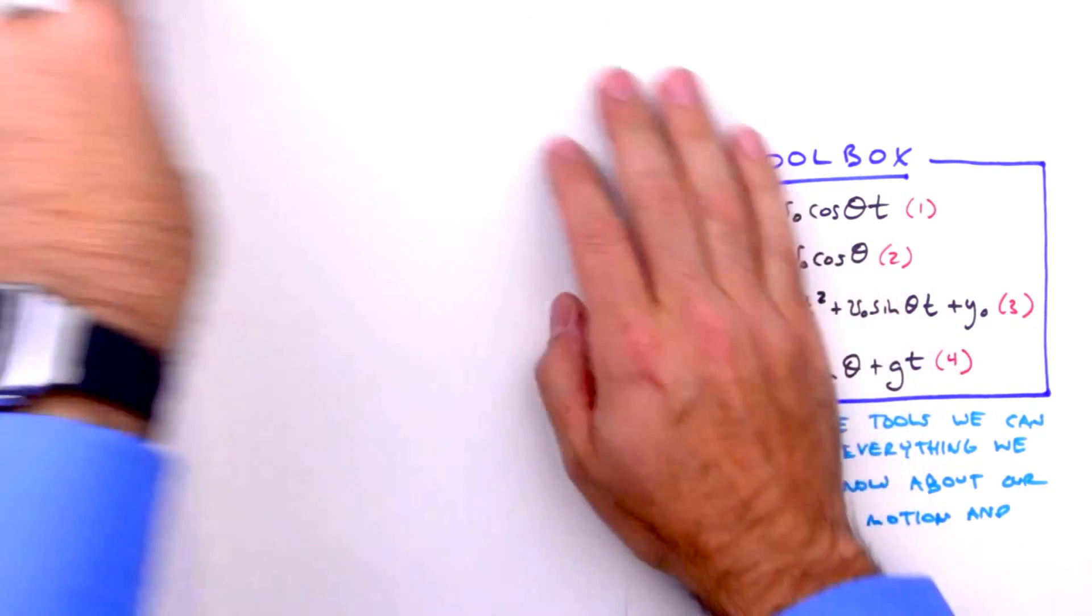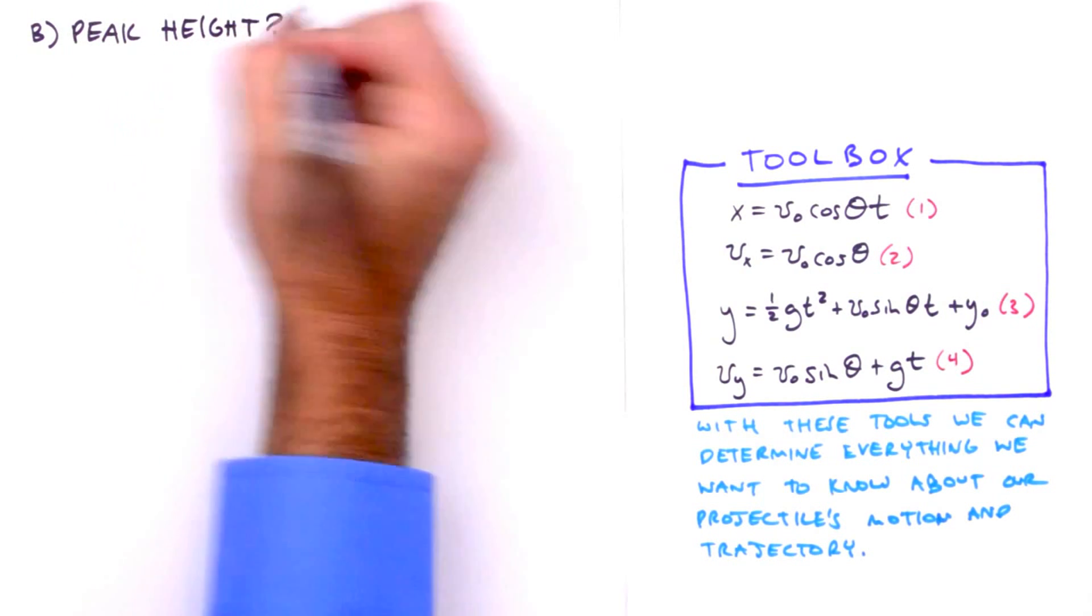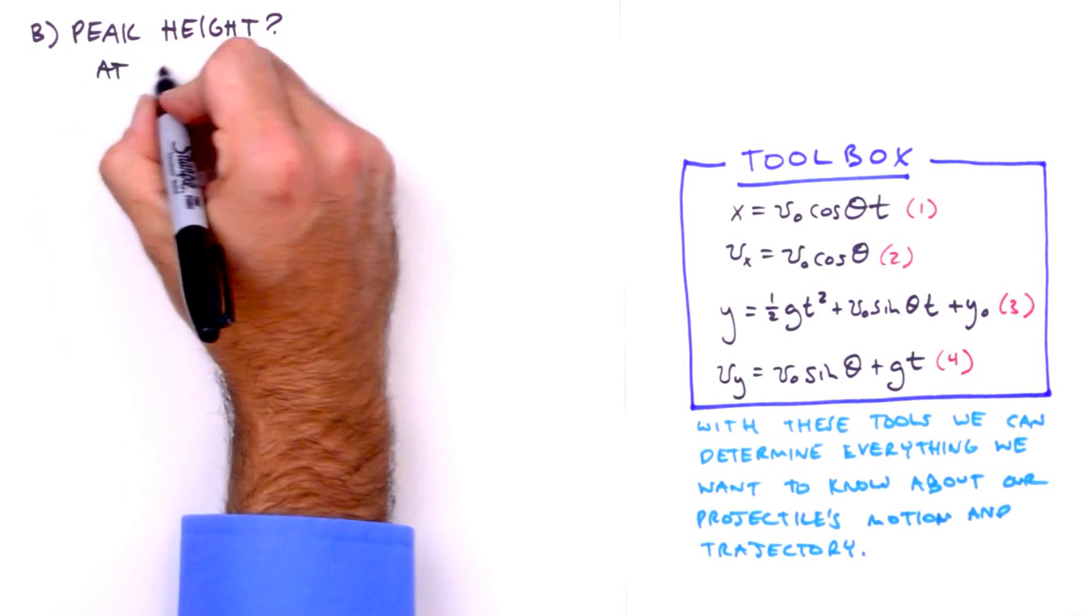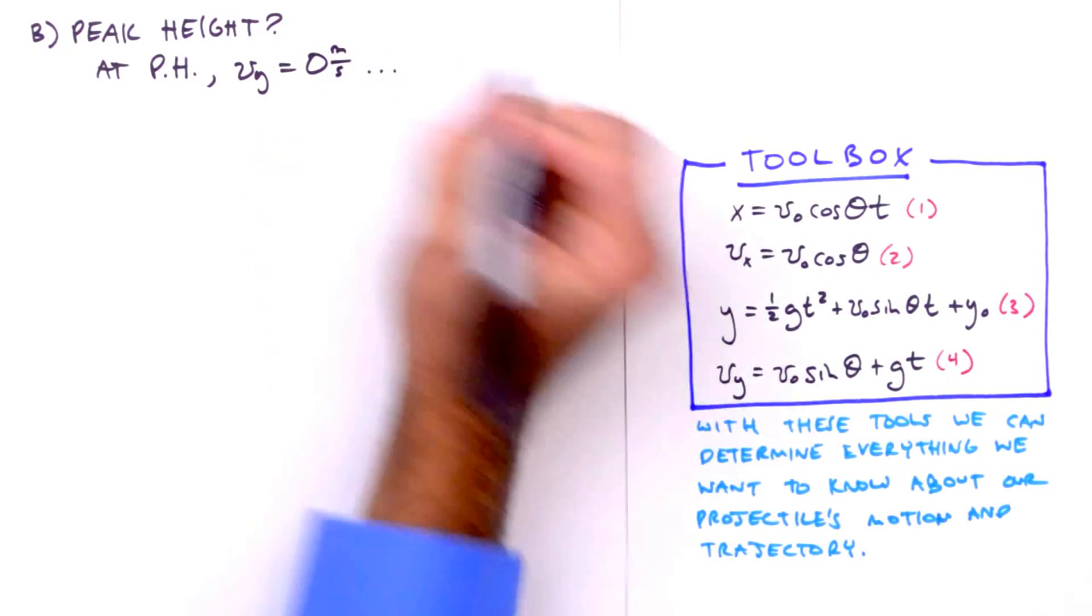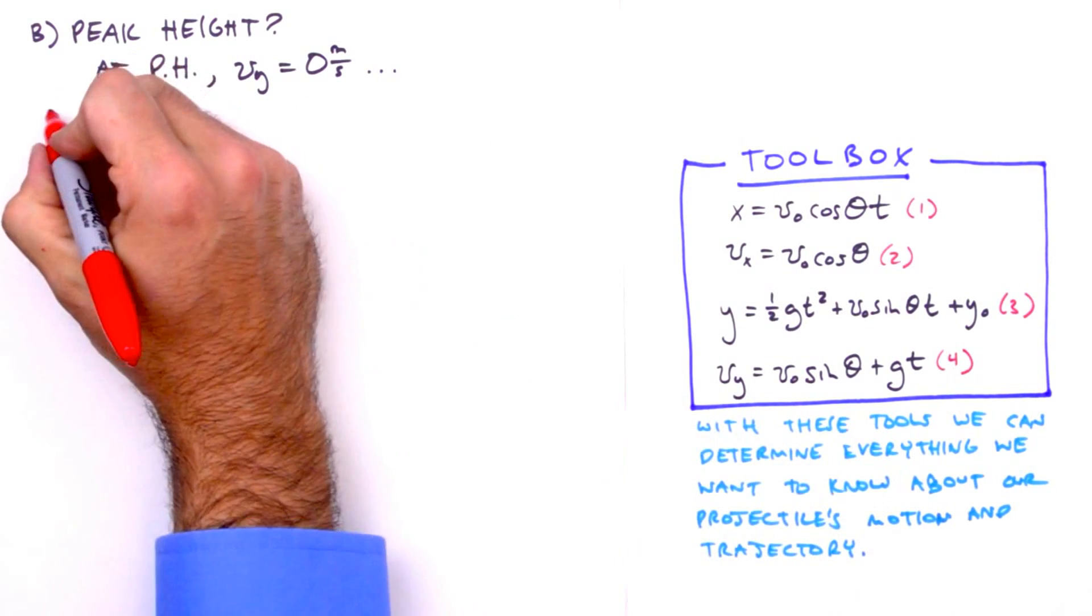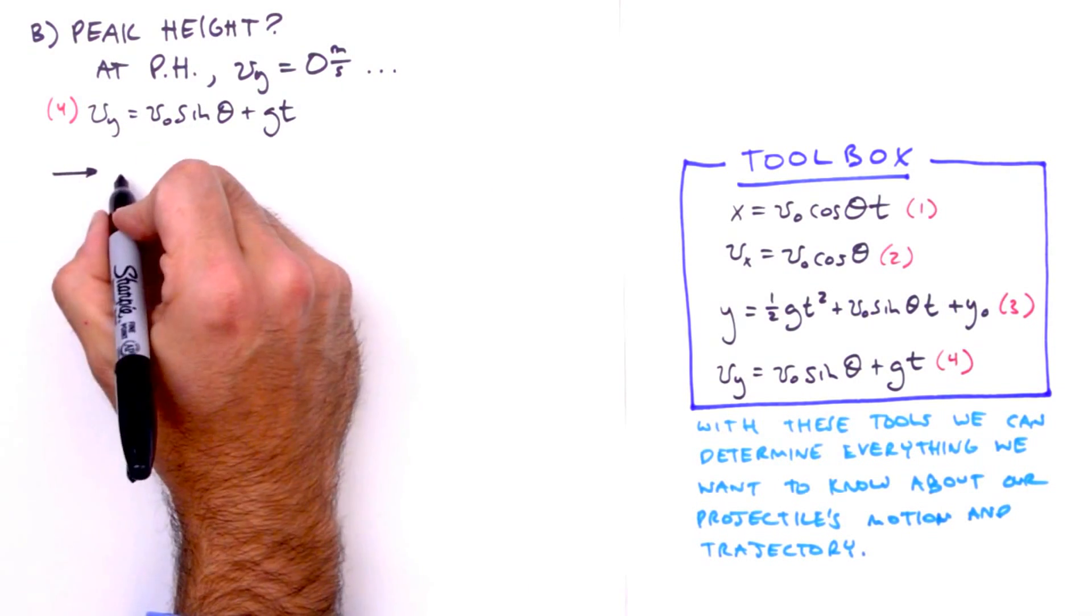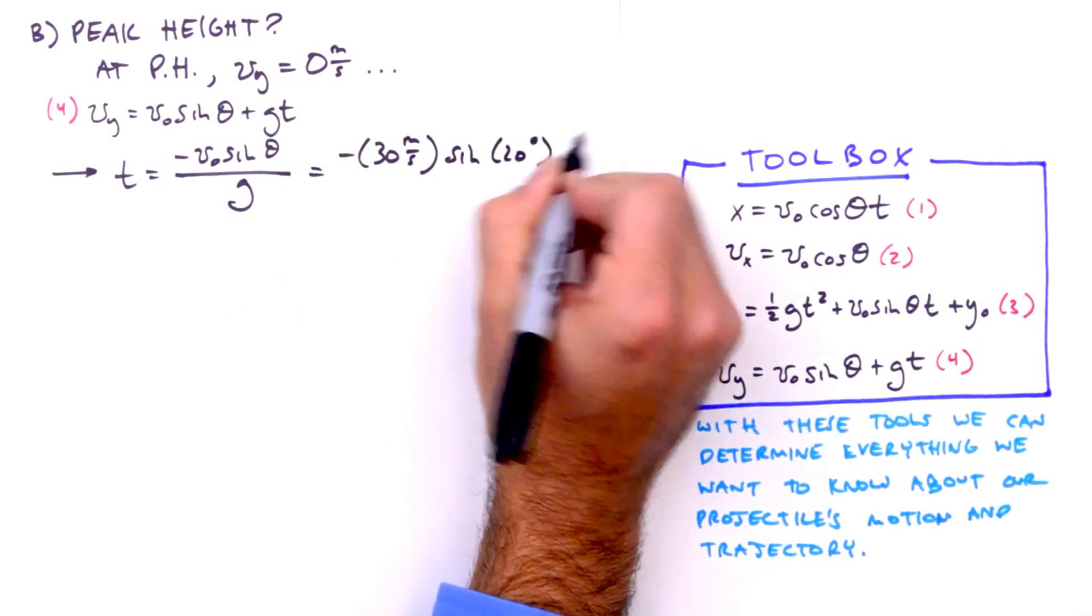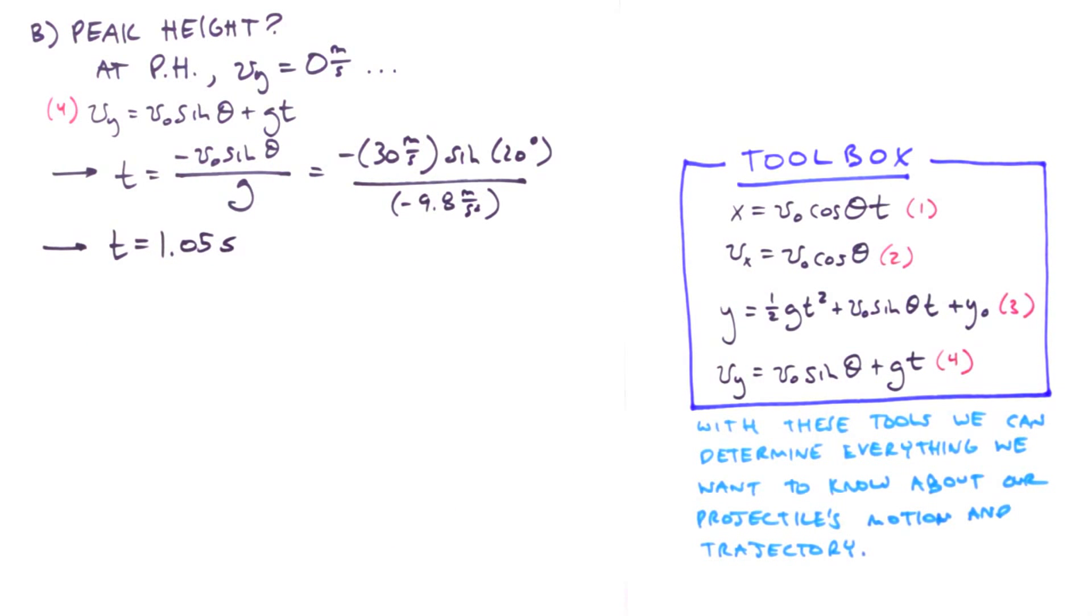Okay, now let's determine the maximum vertical displacement of our projectile, that is the peak height of its trajectory. We'll use equation 3 to determine this value, but we first need to obtain the time which corresponds to this moment. To obtain the time, we need to recognize that the moment our projectile crests its trajectory, the vertical component of its velocity is zero. Using this value, along with equation 4, will give us the time at which our projectile reaches its peak height. Solving equation 4 for time, we get t equals negative v sub o sine theta divided by g. Inserting our values, we find that at 1.05 seconds, our projectile levels out and begins its descent, so to speak.